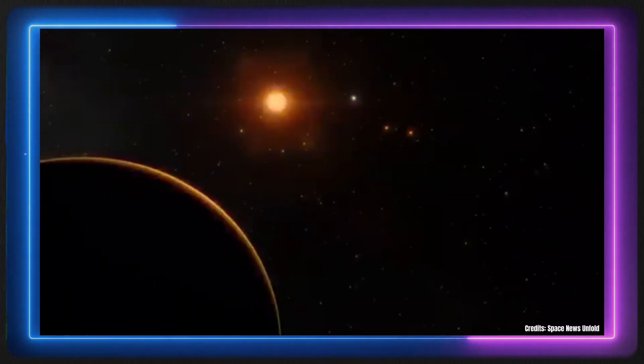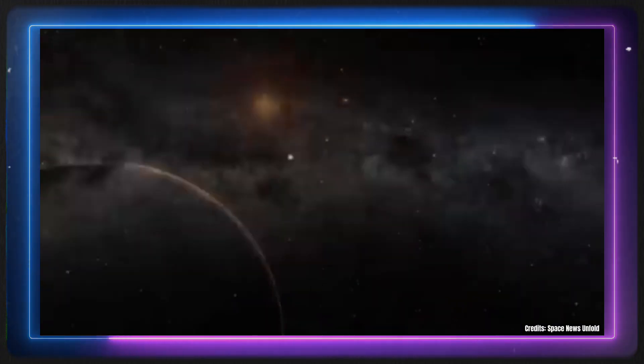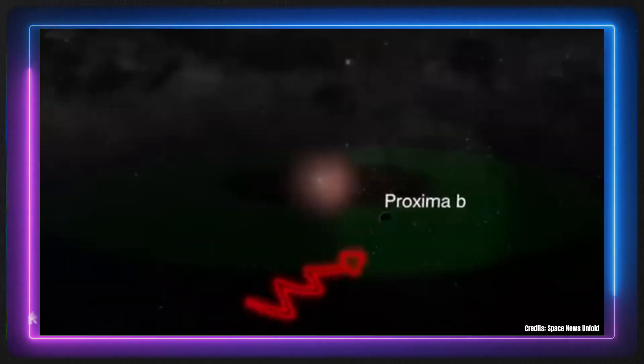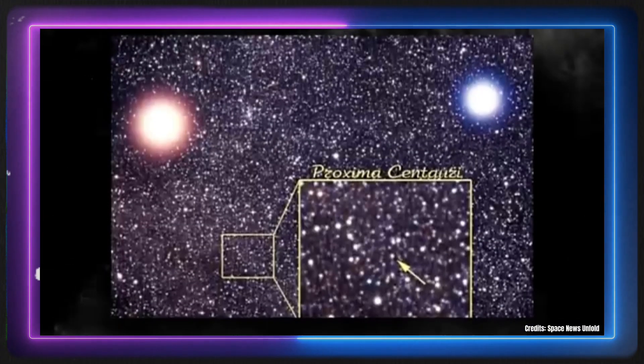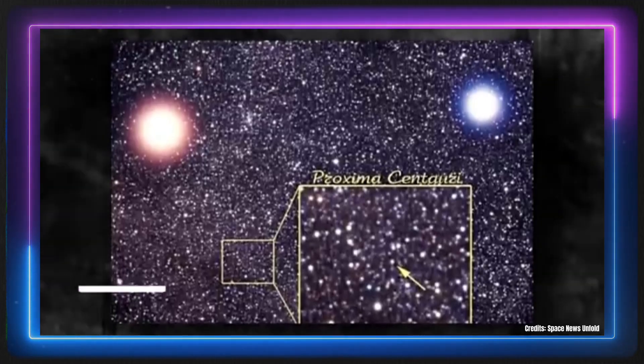In a momentous announcement that could redefine humanity's place in the universe, NASA has revealed the detection of the first alien signal coming from Proxima B, the closest known exoplanet to Earth, just over four light-years away within the habitable zone of its star, Proxima Centauri.